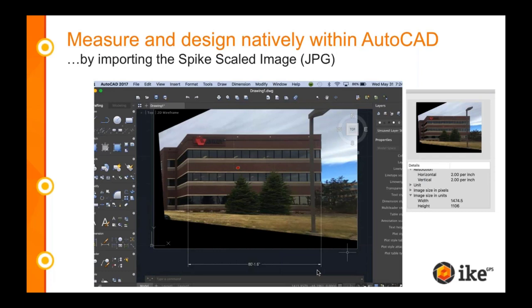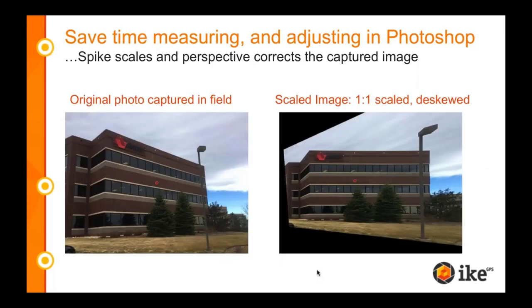We've heard from architects and AutoCAD users that a big pain point is having to deskew photos in Photoshop — you don't need to do that anymore. And not only that, you're not having to manually input measurements. All you have to do is draw on the photo that you took with Spike. So it's saving a lot of that upfront time.